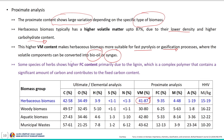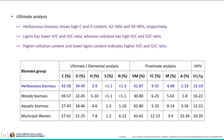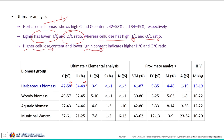Some species of herbaceous biomass show higher fixed carbon content; the maximum fixed carbon content is around 35 percent, primarily due to lignin — a complex polymer that contains a significant amount of carbon. The ultimate analysis shows high carbon and oxygen content. Since herbaceous biomass has more carbohydrate content than lignin, the higher cellulose content and lower lignin content indicates higher H/C and O/C ratios for the herbaceous biomass.